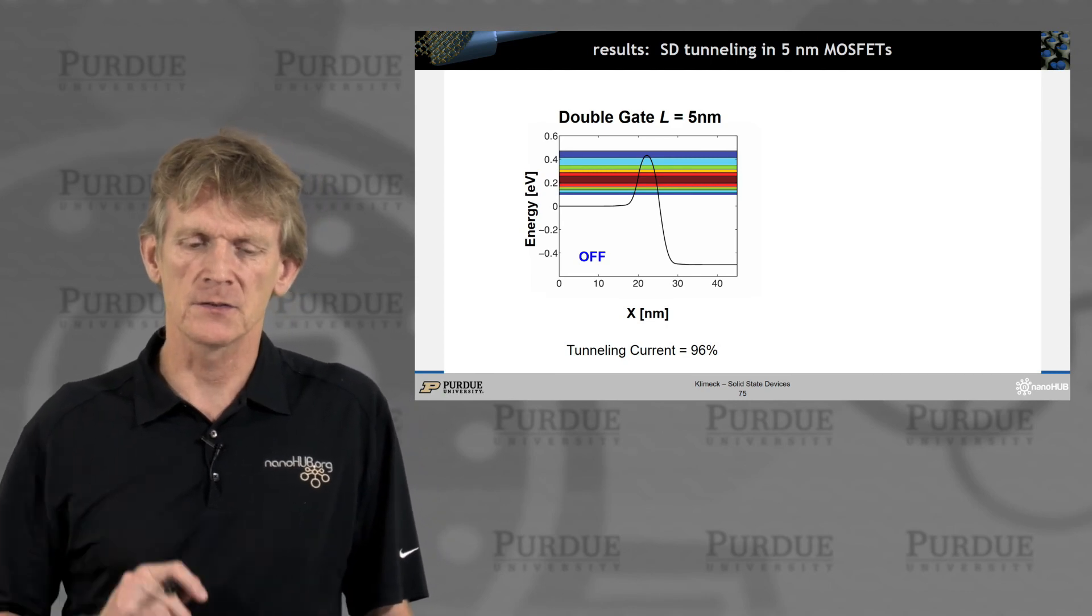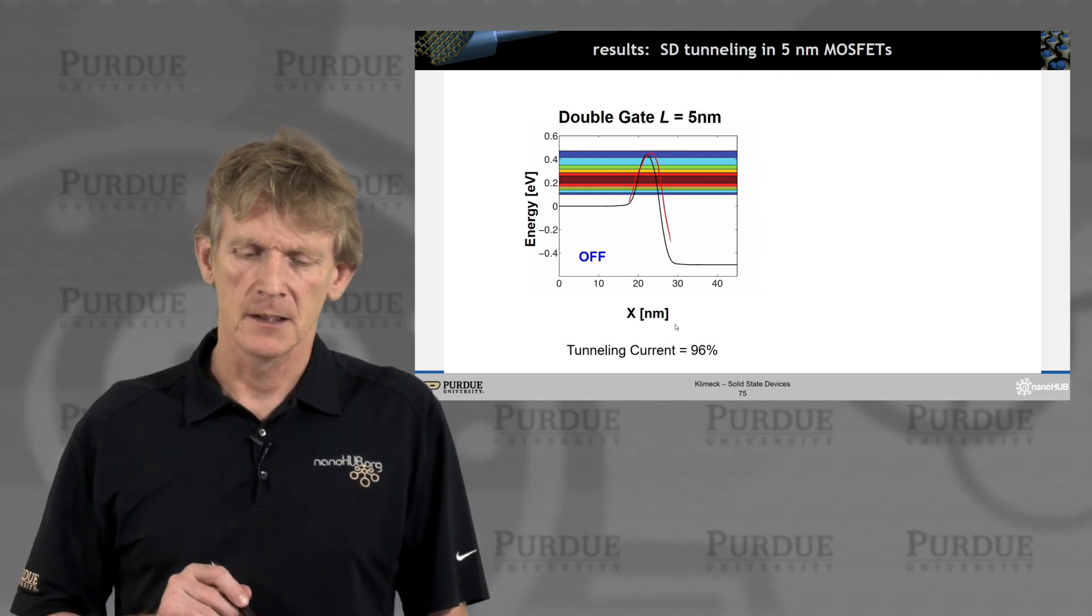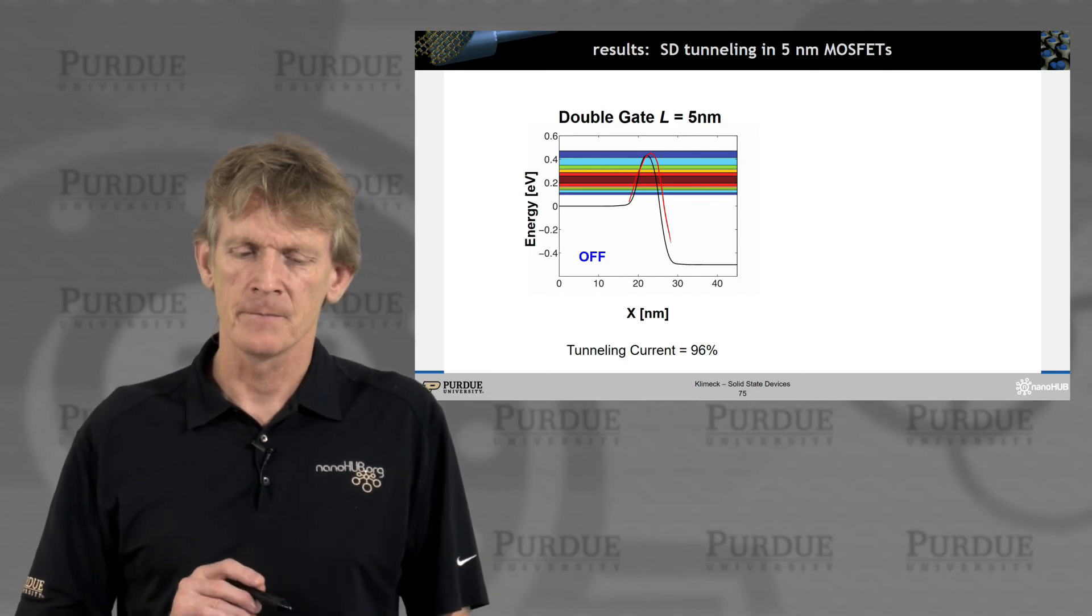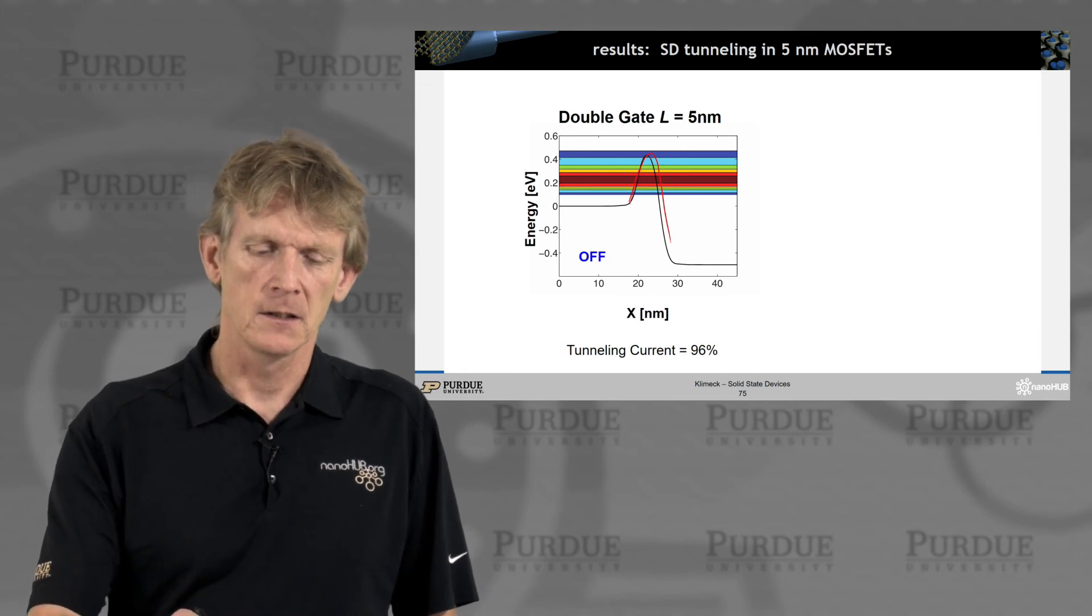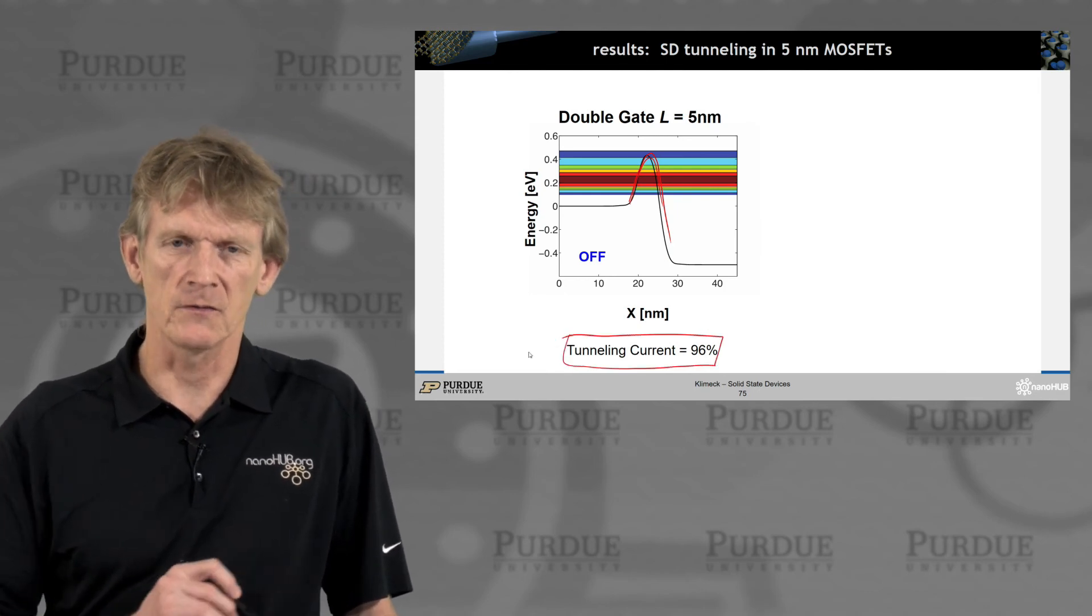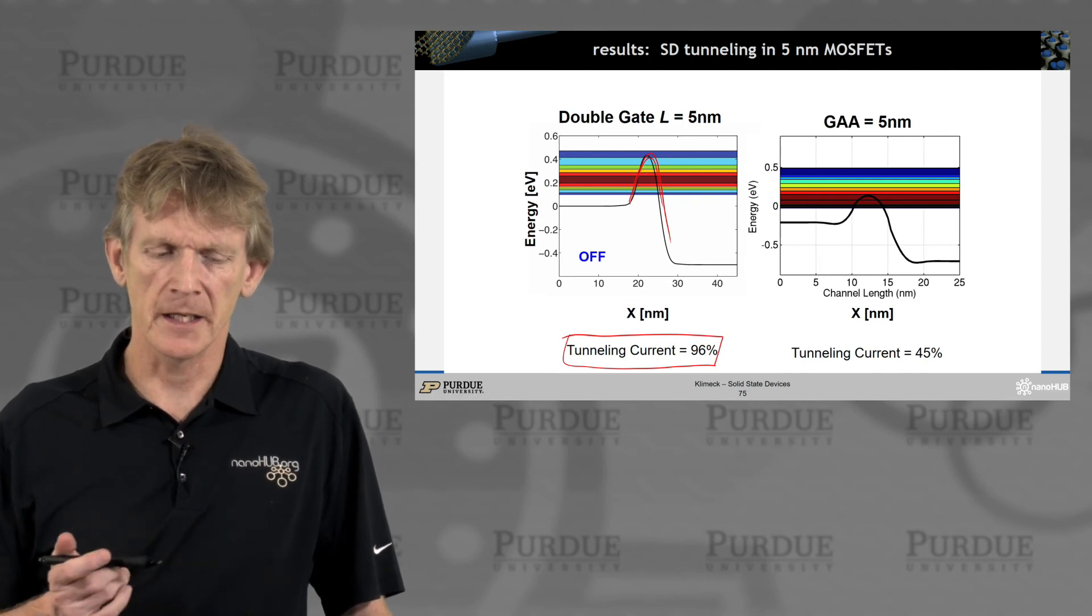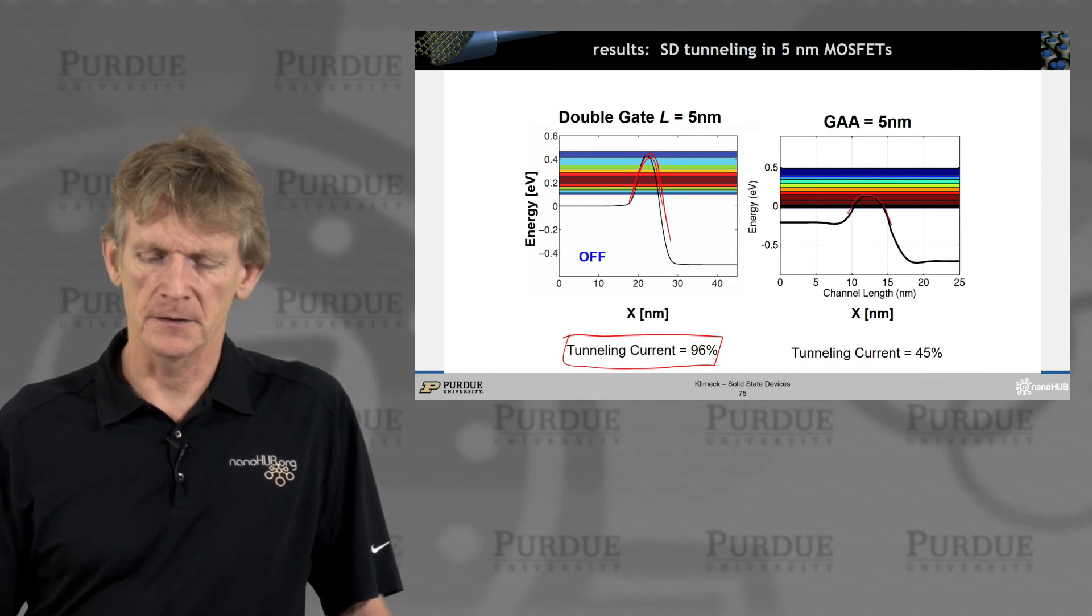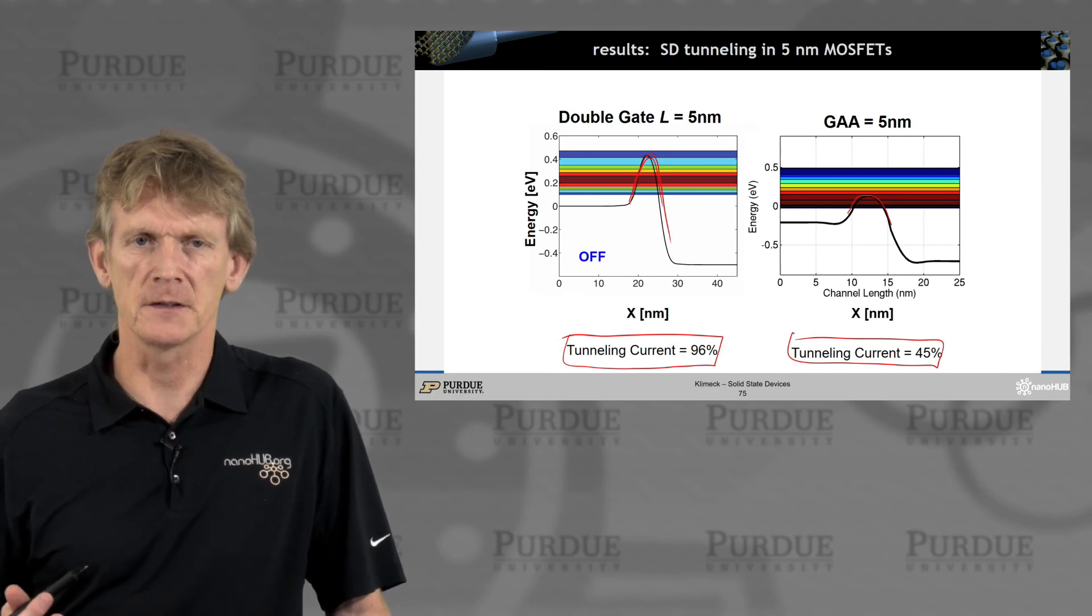Another aspect of this is source drain tunneling, meaning you'd like to have a barrier here that shuts off the current. But if your mass is light, you actually end up tunneling through this device quite a bit. So in a double gate, where you don't have good gate control, this barrier is actually not very strong, and you have a lot of tunneling current. And in fact, the off-current consists of 96 percent of tunneling current. And if you have a gate all around device, you can have a better gate control, and the tunneling current is only 45 percent of the off-current. So you can shut off the device better.